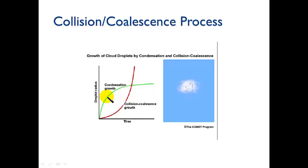If we just relied on condensation growth, so this is droplet radius with time, if we just relied on condensation growth, those droplets wouldn't get big enough. And so we need that collision and coalescence process to make the droplets grow big enough that they can fall to the ground without evaporating before they hit the ground.